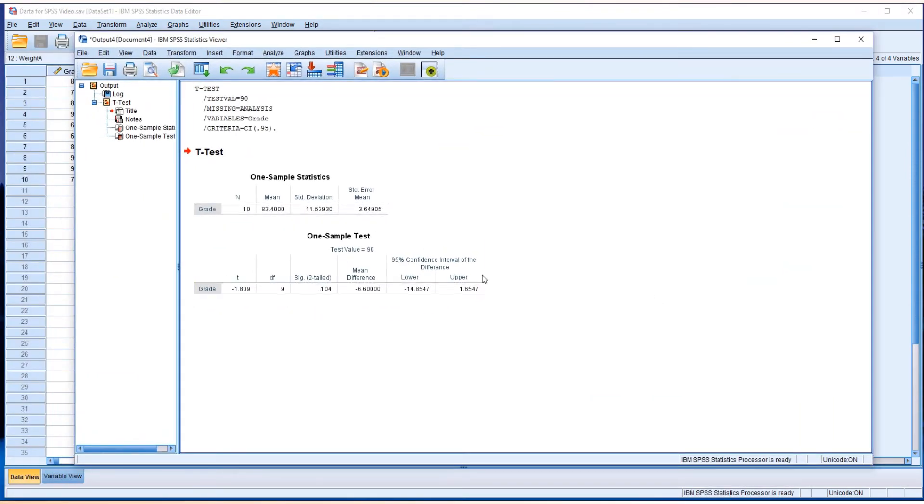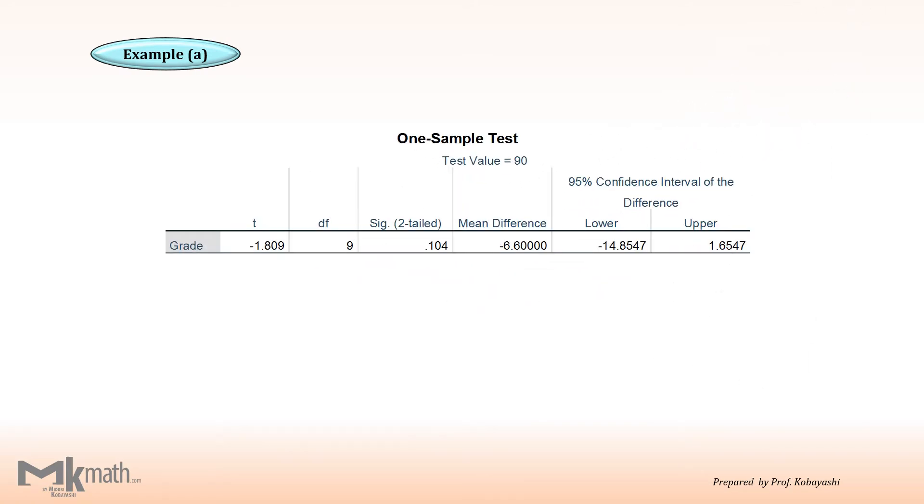Now, we have one-sample t-test result. Now, this is the output table from SPSS. As you can see, test value was 90.